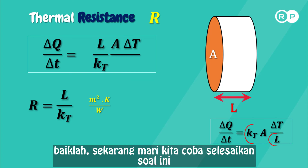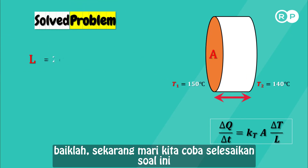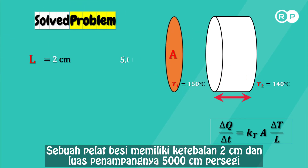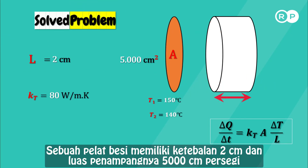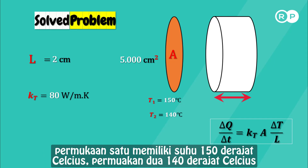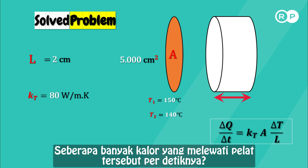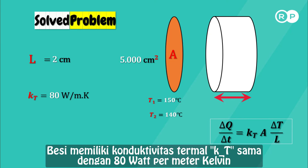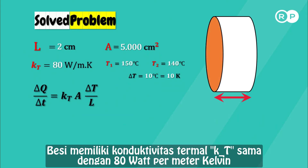Now let's solve a problem. An iron plate 2 cm thick has a cross-sectional area of 5000 cm squared. One face is at 150°C and the other is at 140°C. How much heat passes through the plate each second? For iron, KT = 80 watts per meter-kelvin.